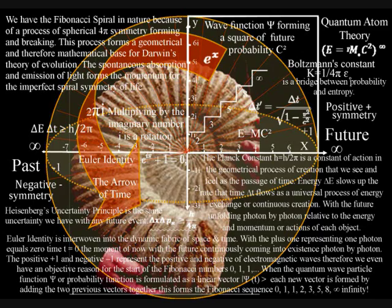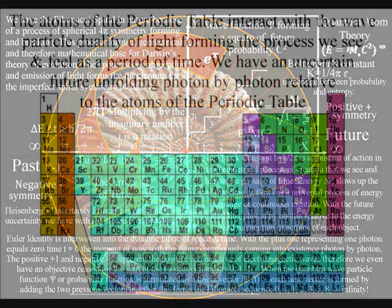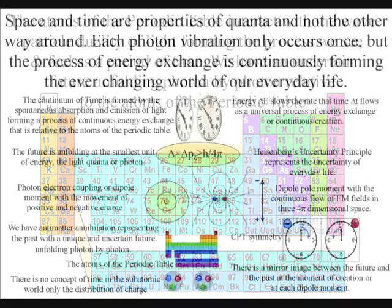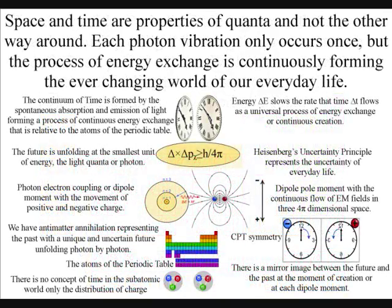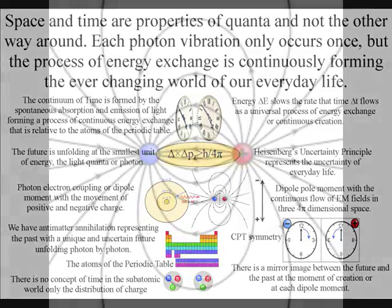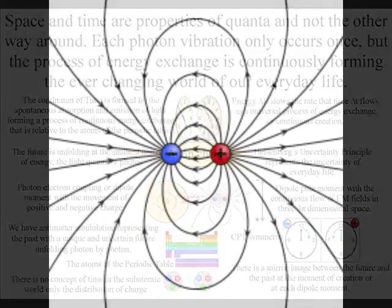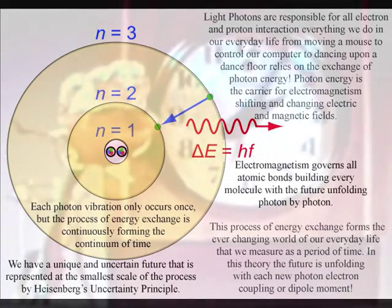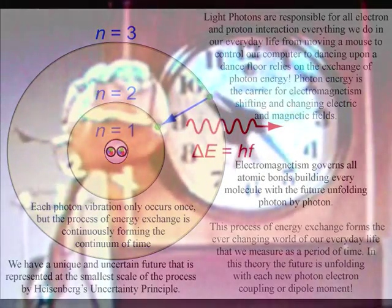This is logical in this theory because the future is continuously unfolding with an exchange of photon energy relative to the atoms of the periodic table. Each photon vibration only occurs once, but the process of energy exchange is continuously forming the movement of positive and negative charge. This process forms the ever-changing world of our everyday life that we measure as a period of time.